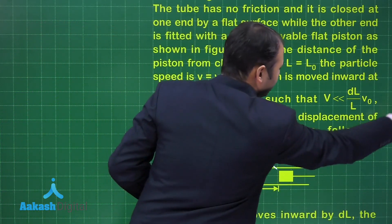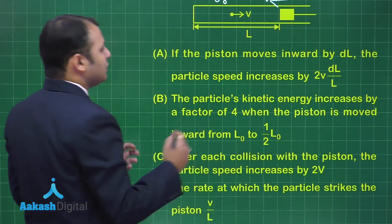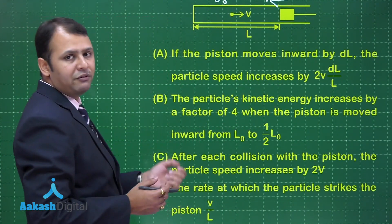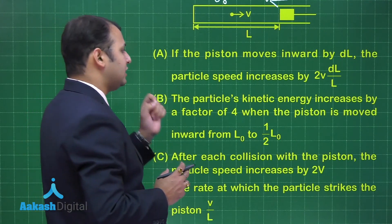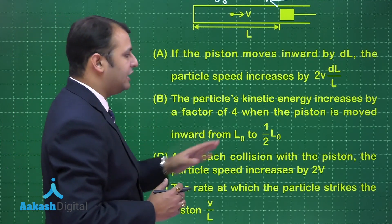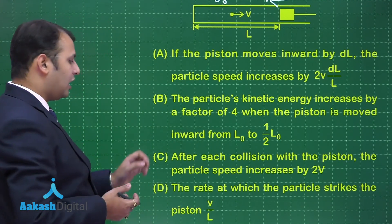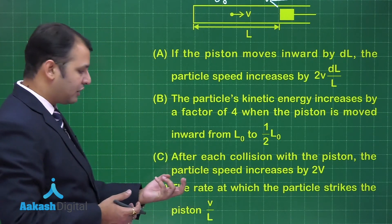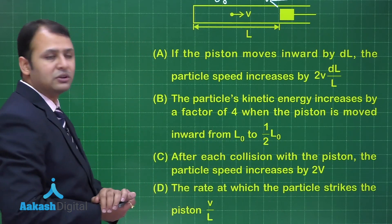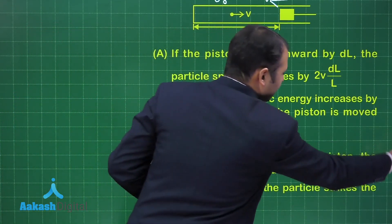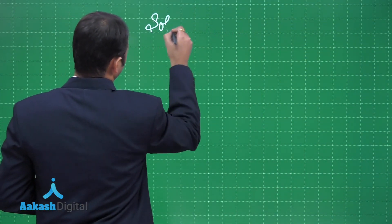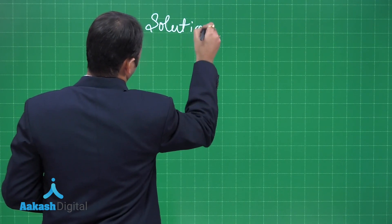The first option asks: when the piston moves inward by a small distance, what is the increase in the particle's speed? The second option asks about the particle's kinetic energy. The third asks: after each collision, by what factor does the particle's velocity increase? And the last option asks about the rate at which the particle strikes the piston.